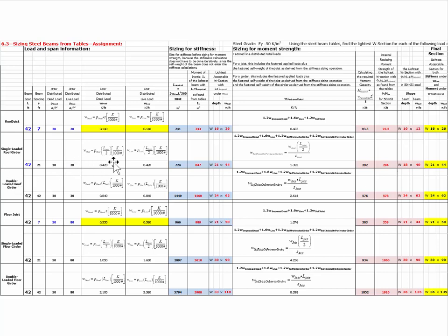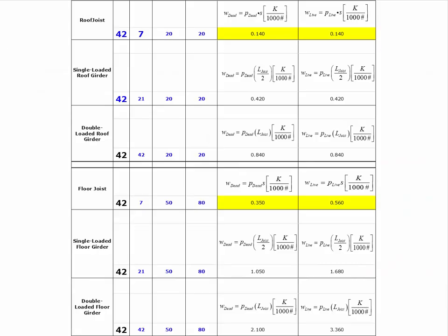The loads on the primary members were calculated previously because the tables do not automatically account for load transfer, so it became our responsibility to calculate all loads occurring on the primary members. First we're going to size everything for stiffness. The highlighted cells show the loads on the roof joists and the floor joists — those are the only loads we're going to add into multi-frame.